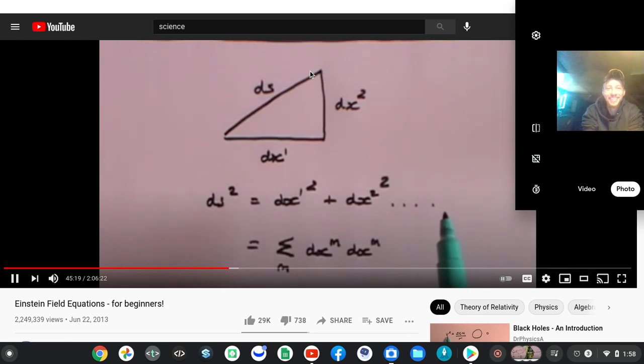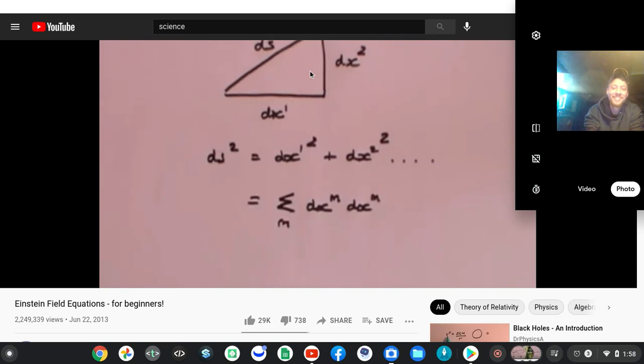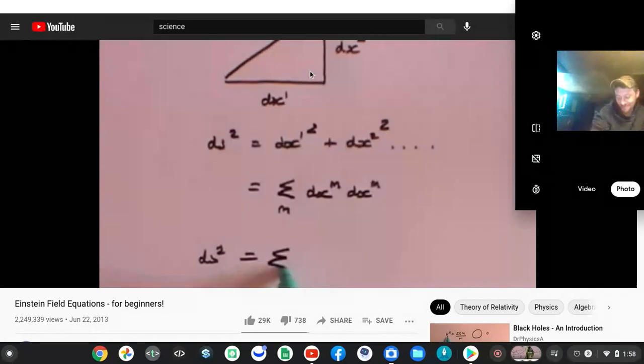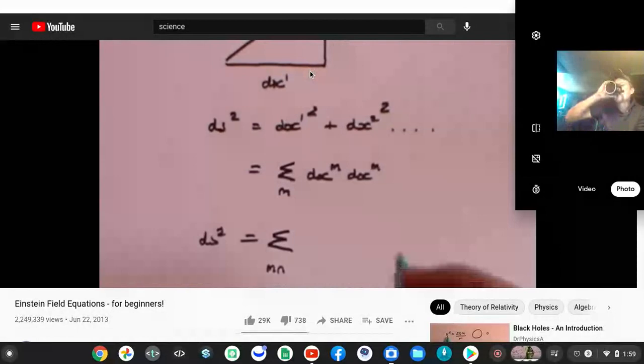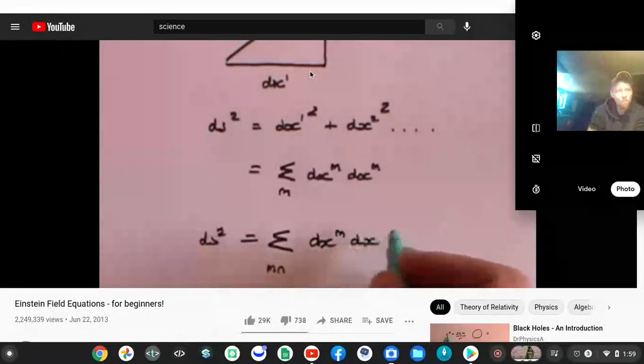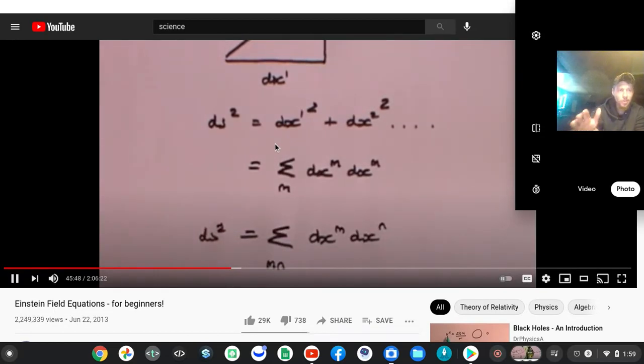If m were 3 you would get a further term dx3 squared. Now I'm going to make it a little bit more complicated but you'll see why. That means that ds squared is equal to the sum over m and n of dxm times dxn. Stay with me, don't scare.